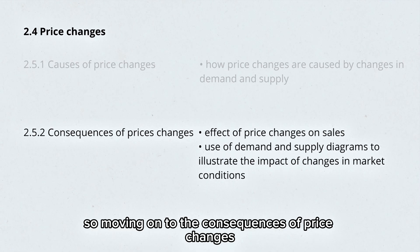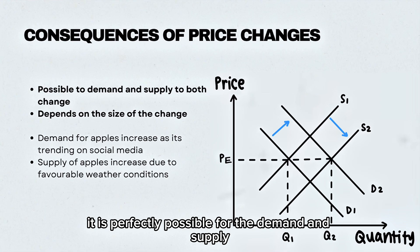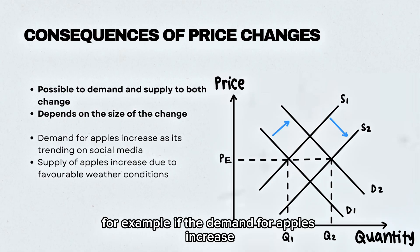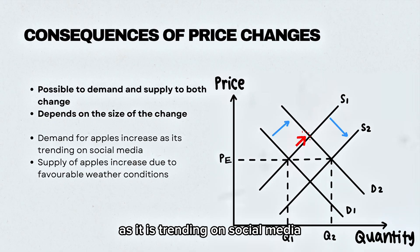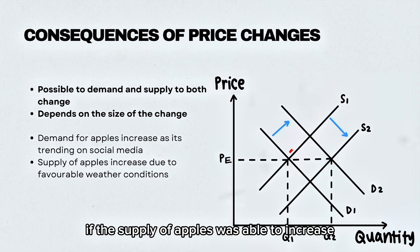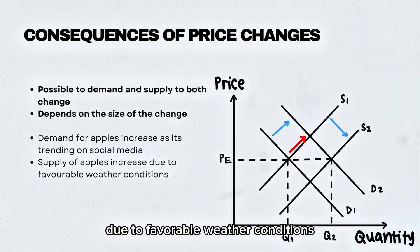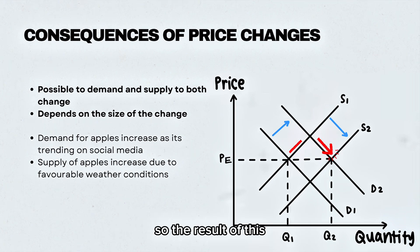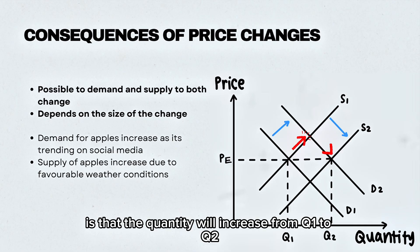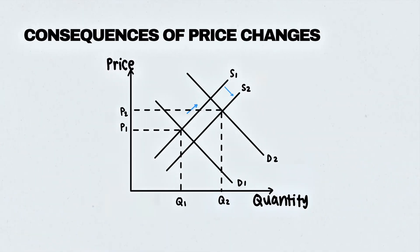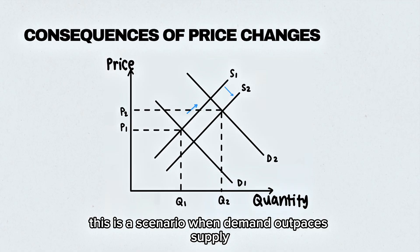Moving on to the consequences of price changes — it is perfectly possible for demand and supply to both change at the same time, depending on the size of the change. For example, if demand for apples increases because it is trending on social media and advertisements, demand shifts from D1 to D2. But at the same time, if supply of apples increases due to favorable weather conditions, supply shifts from S1 to S2. The result is that quantity increases from Q1 to Q2 but prices stay the same at P equilibrium.